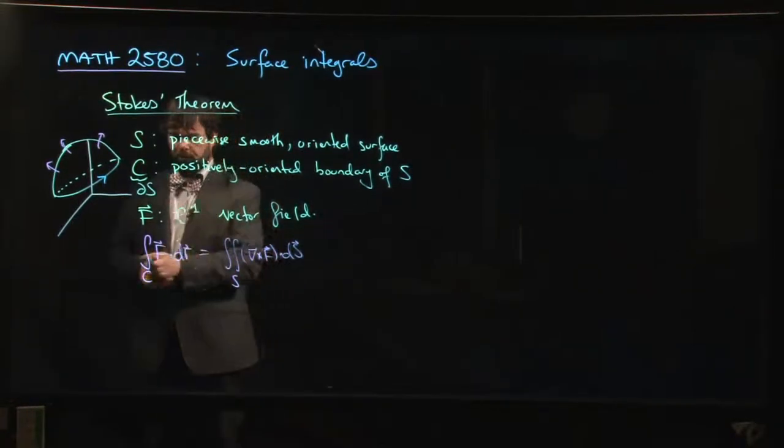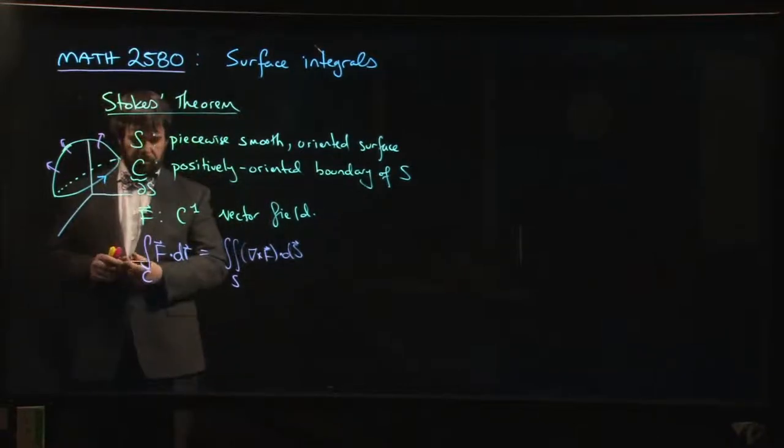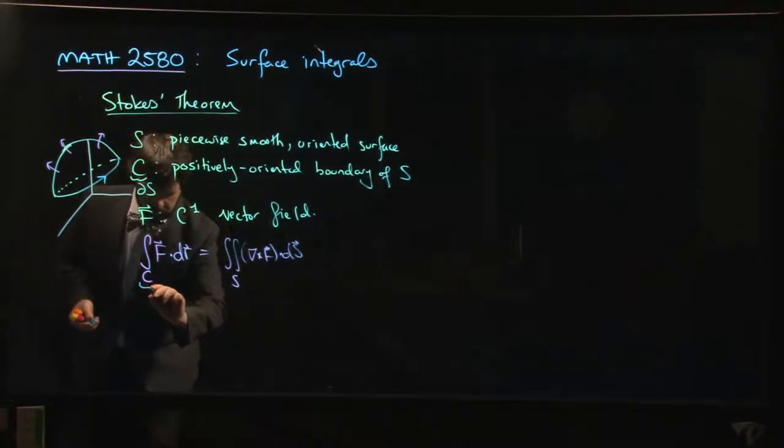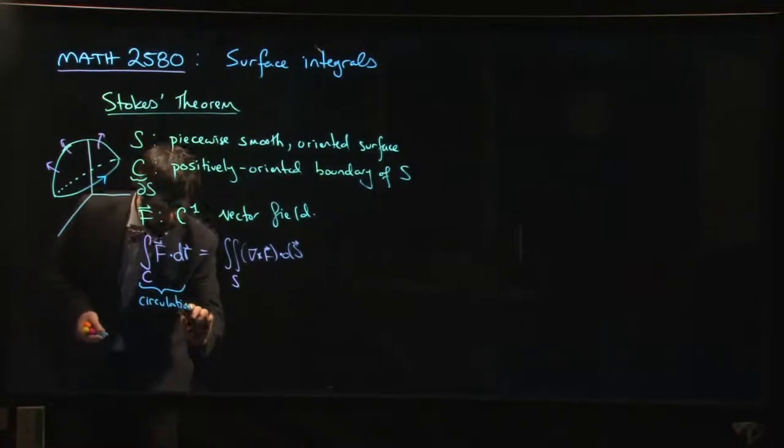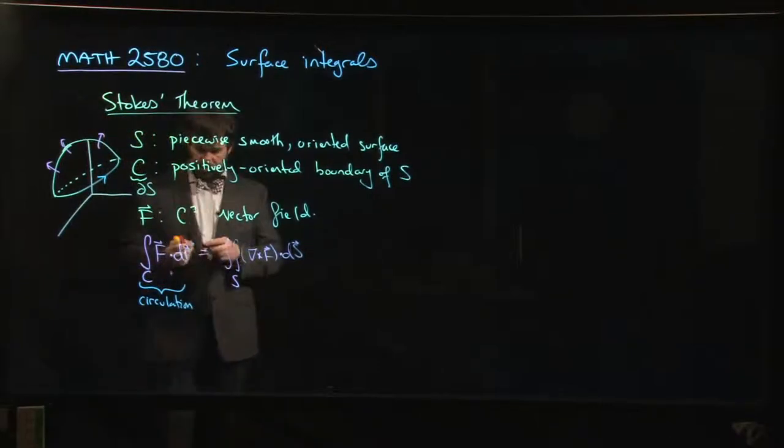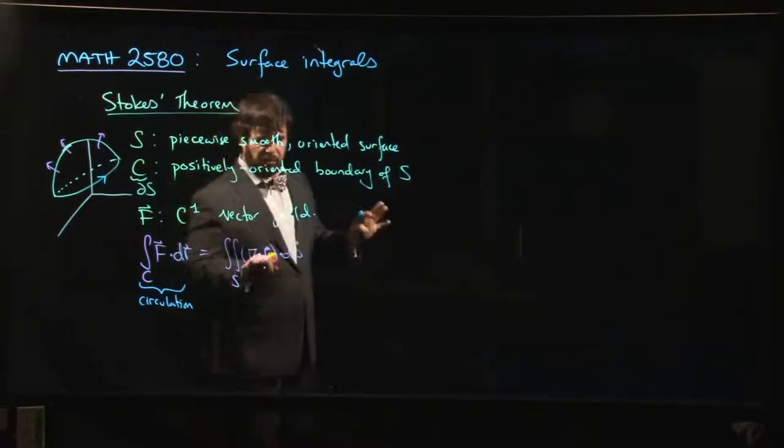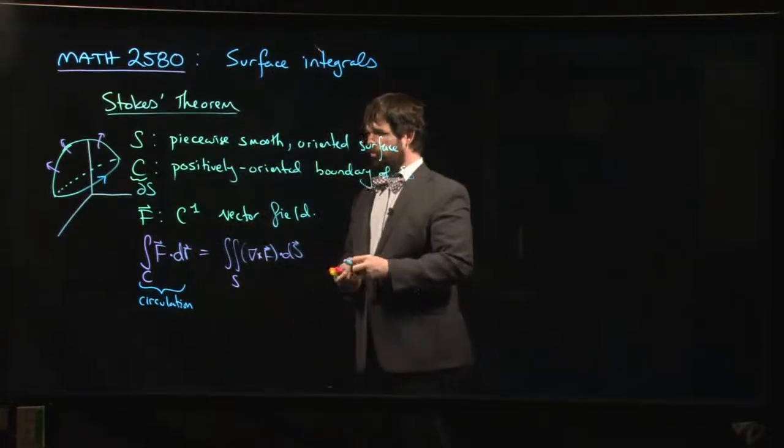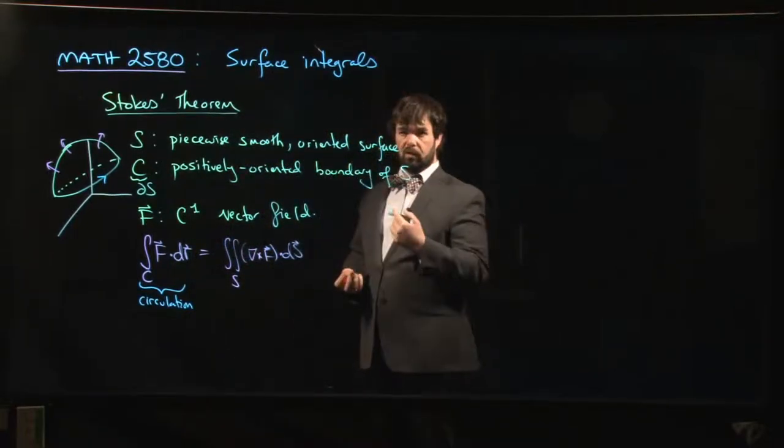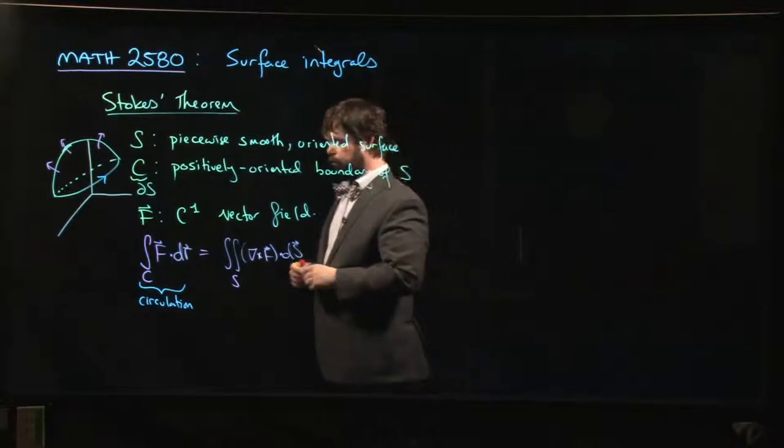For closed curves, this line integral has a name. This is referred to, we've mentioned this before, as the circulation of F. And so one of the ways that you can understand this, similar to the divergence theorem, is you can talk about circulation around a point.